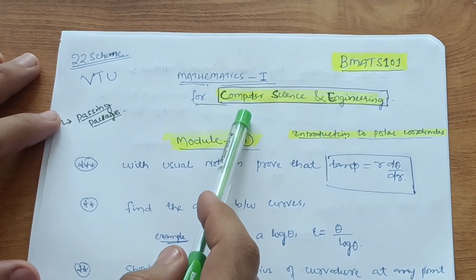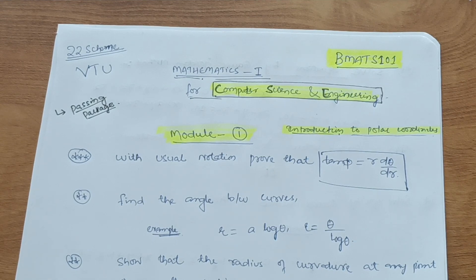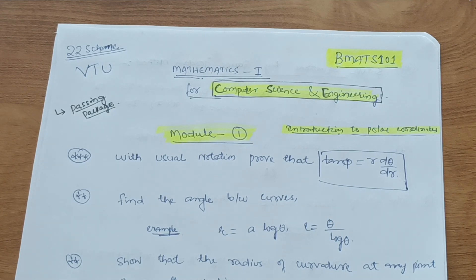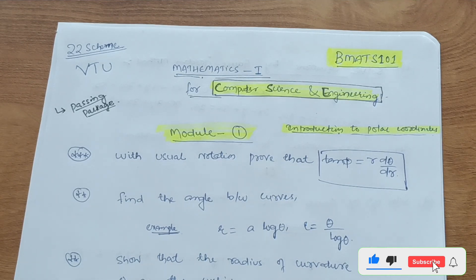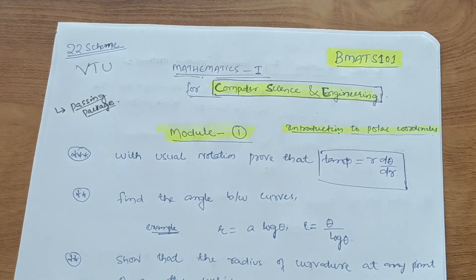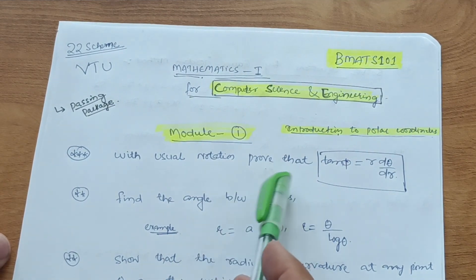Welcome back, my dear friends. Today I am with another video for Mathematics 1 for the Computer Science and Engineering department. VTU was initially setting papers for M1 same for all branches, but now under the 22 scheme, they have changed the whole subject course. There is a difference in one module compared to other branches. In this video, I want to discuss how to pass Mathematics 1 with ease.